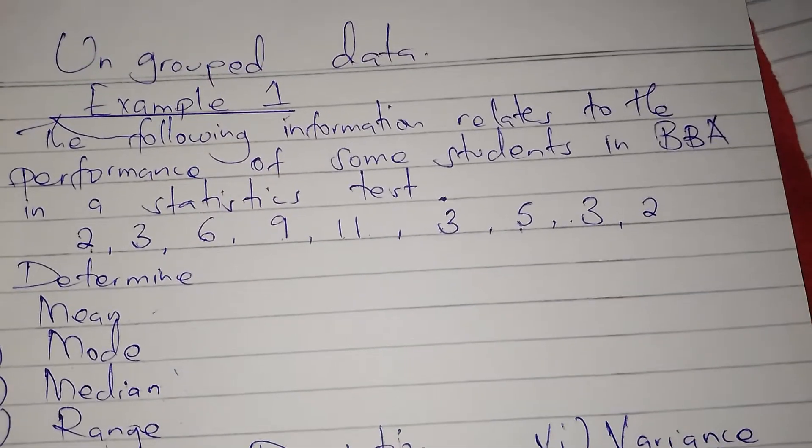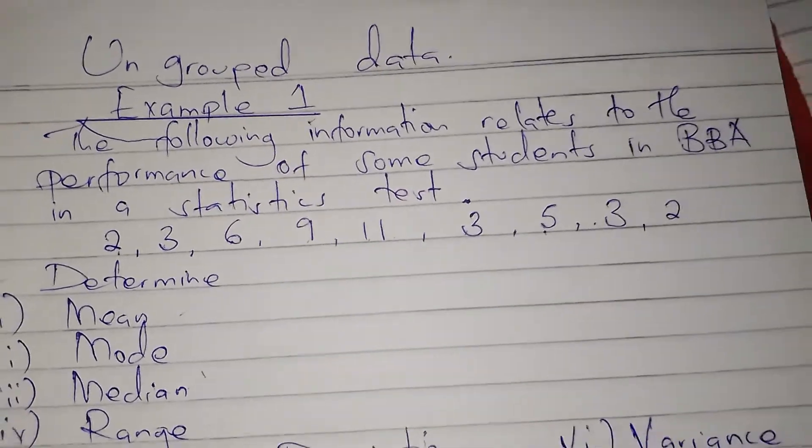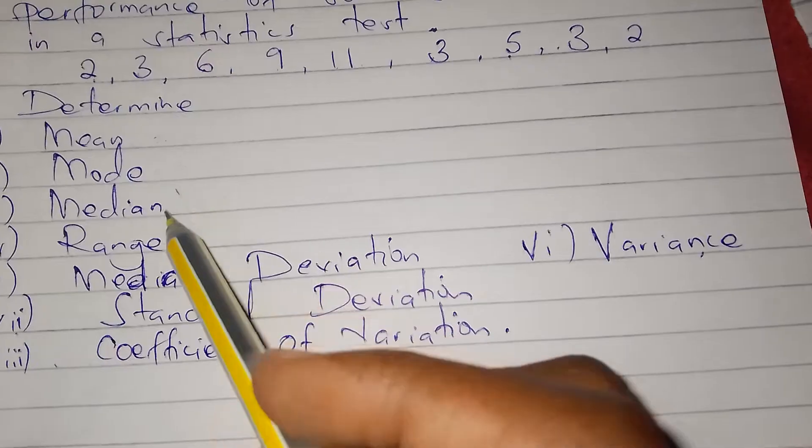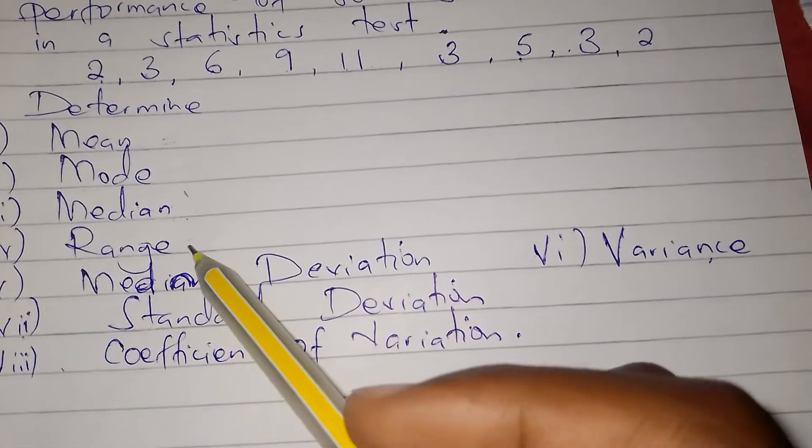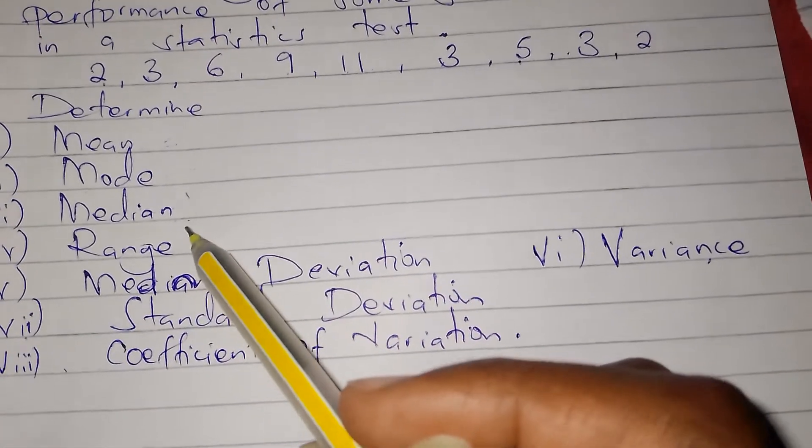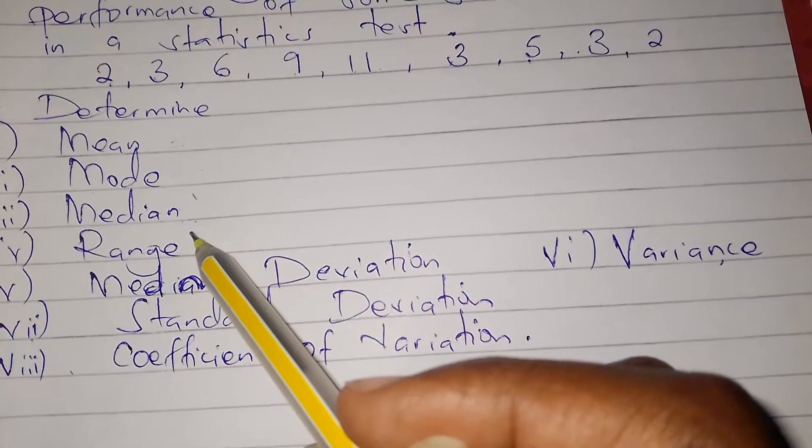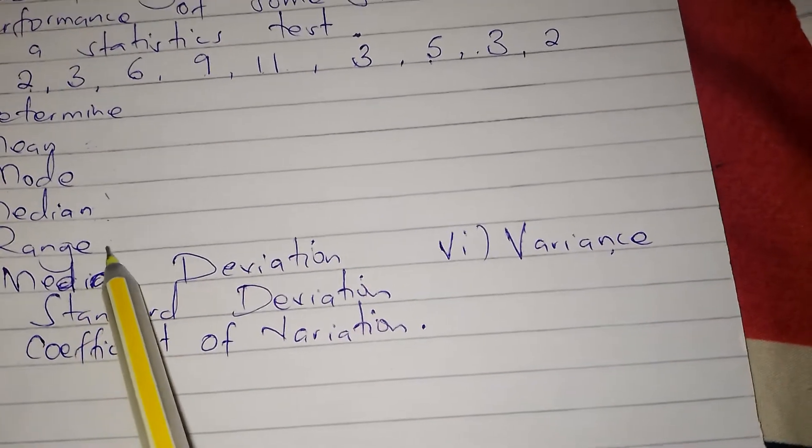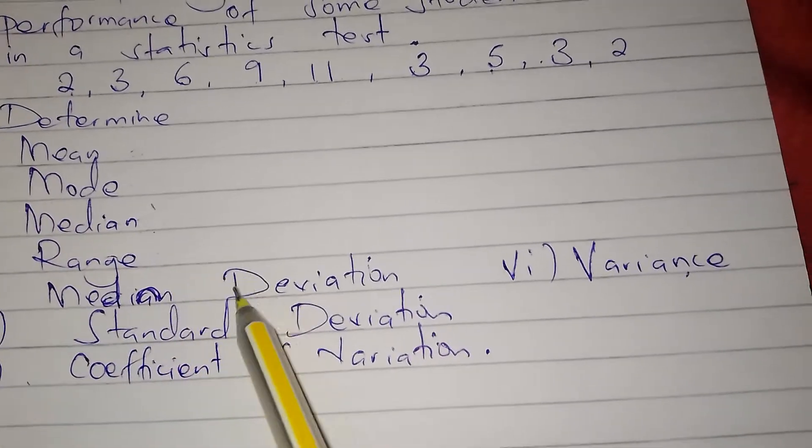We are still continuing with our question about ungrouped data, and we are done with determining the mean, mode, and median. So in this video we are going to look at the measures of dispersion or measures of variancy, and we are going to look at the range and then the mean deviation.